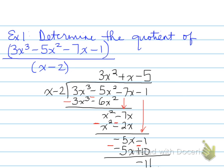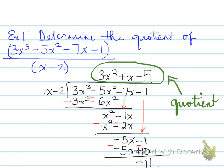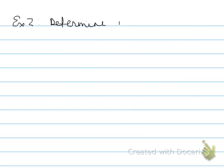There is a remainder of negative 11. Here is our quotient — found at the top. The question asks us to determine the quotient, and here it is. Next example.